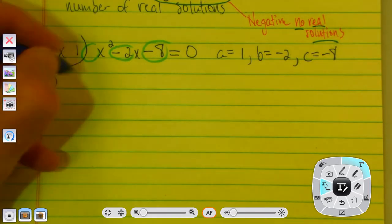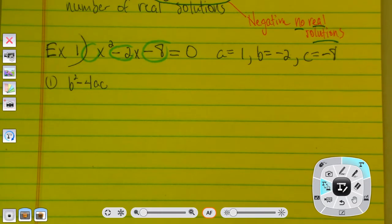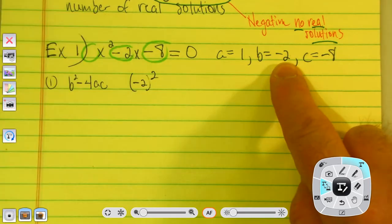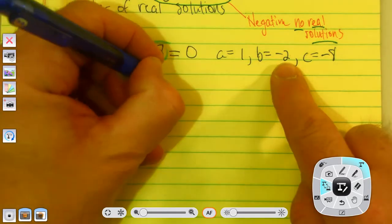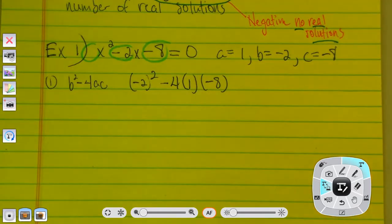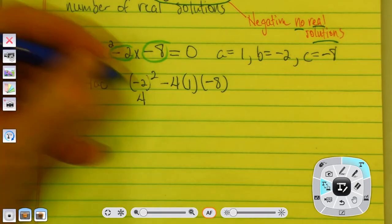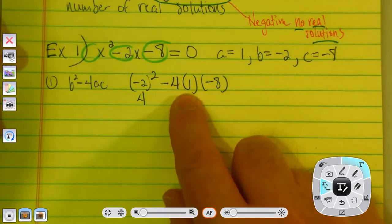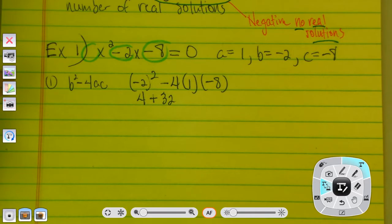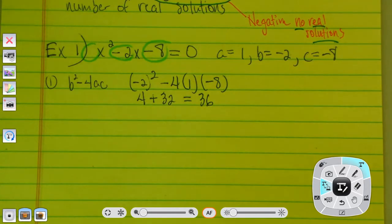So, remember, the discriminant, step one, is b squared minus 4ac, right? What you wrote in your notes. So, for b, I'm going to plug in a negative 2. So, I'm going to write it this way. It's negative 2 squared minus 4 times 1 times negative 8. Now, negative 2 squared is positive 4, negative 4 times negative 8, positive 32. 4 plus 32 equals 36.